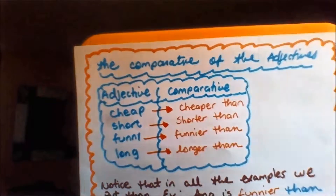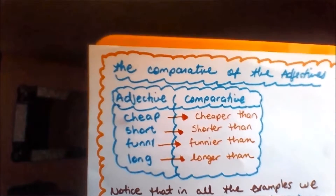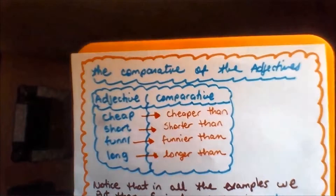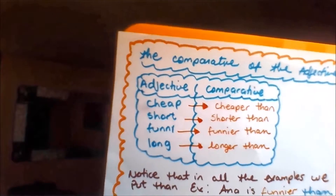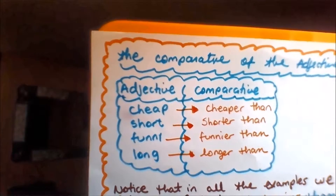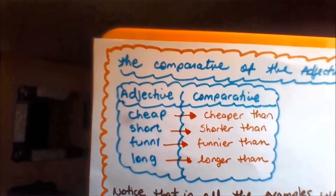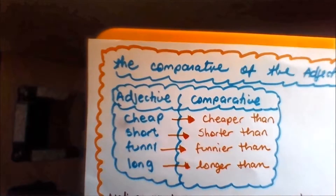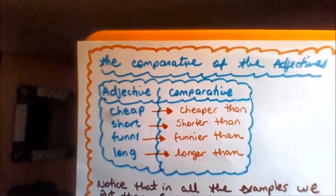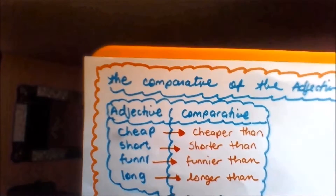In the first one we have cheap — cheaper than. Short — shorter than. Funny — funnier than. Long — longer than.